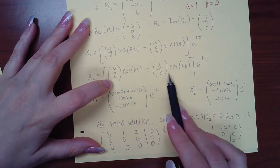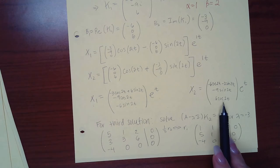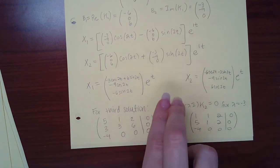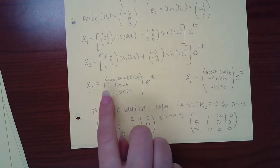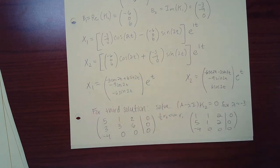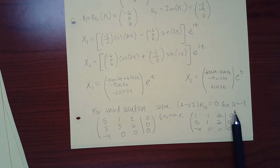Plugging into the complex solution formulas with beta = 2 and alpha = 1: x1 = [B2·cos(2t) − B1·sin(2t)]·e^t and x2 = [B1·cos(2t) + B2·sin(2t)]·e^t. Computing entry by entry: x1 top: −3·cos(2t) + 6·sin(2t); x1 middle: −9·cos(2t); x1 bottom: −6·sin(2t). For x2 top: −6·cos(2t) − 3·sin(2t); x2 middle: −9·sin(2t); x2 bottom: 6·cos(2t). Both multiplied by e^t.